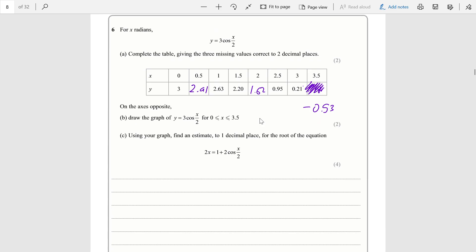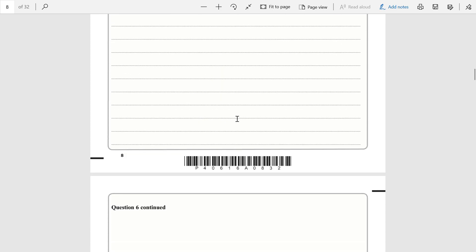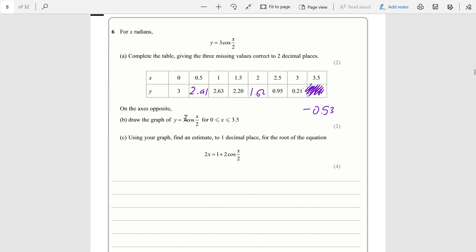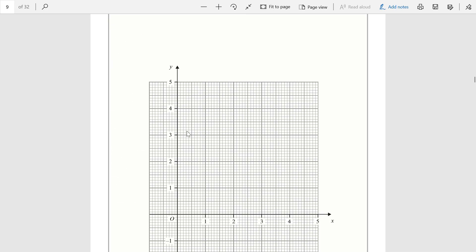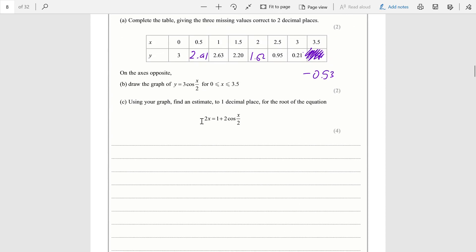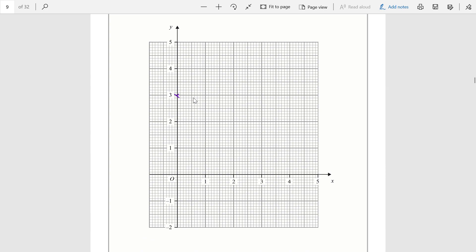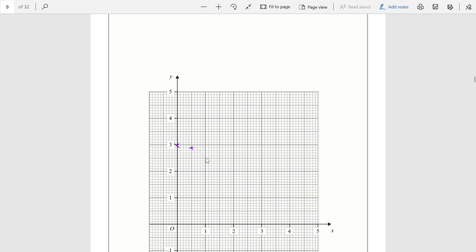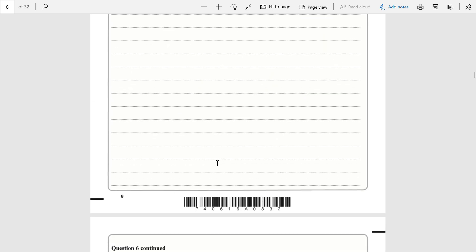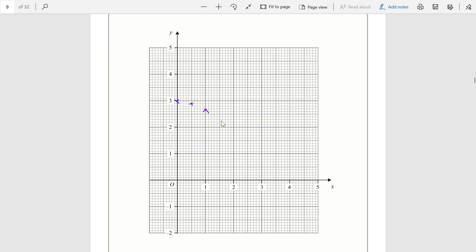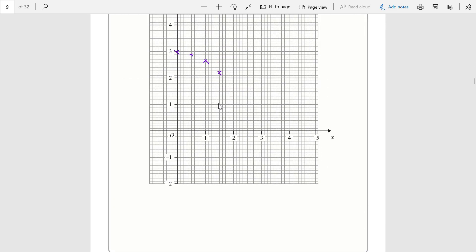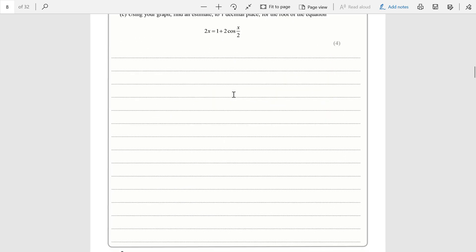Now it's asking us to draw this graph. The way they want you to do this in the exam is by plotting the points you have in the table. For example, you have 0 goes to 3, 0.5 goes to 2.91, 1 would go to 2.63, 1.5 goes to 2.20, 2 would go to 1.62. You can kind of see the shape of the cosine graph taking place.